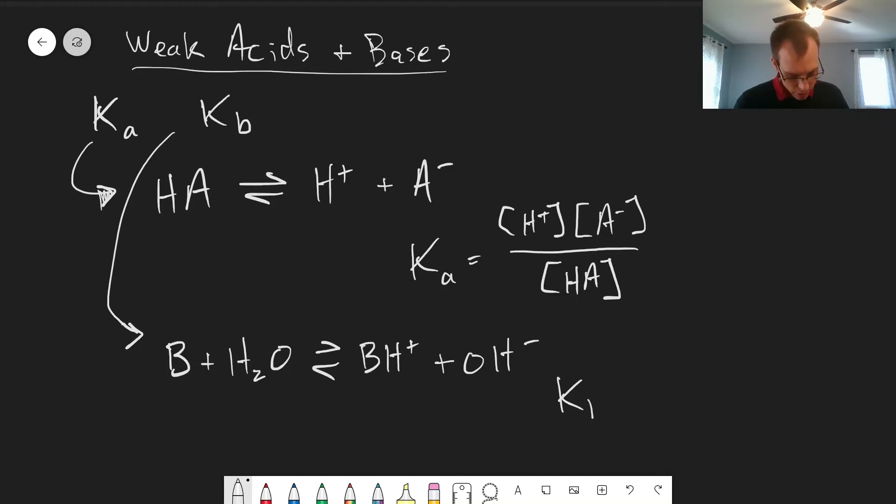And so this is the equilibrium that we write Kb in terms of. So we have our BH plus and OH minus going on the top of the fraction, and then our weak base on the bottom. And of course, the water doesn't show up because it is a pure liquid, and so it doesn't affect the equilibrium.